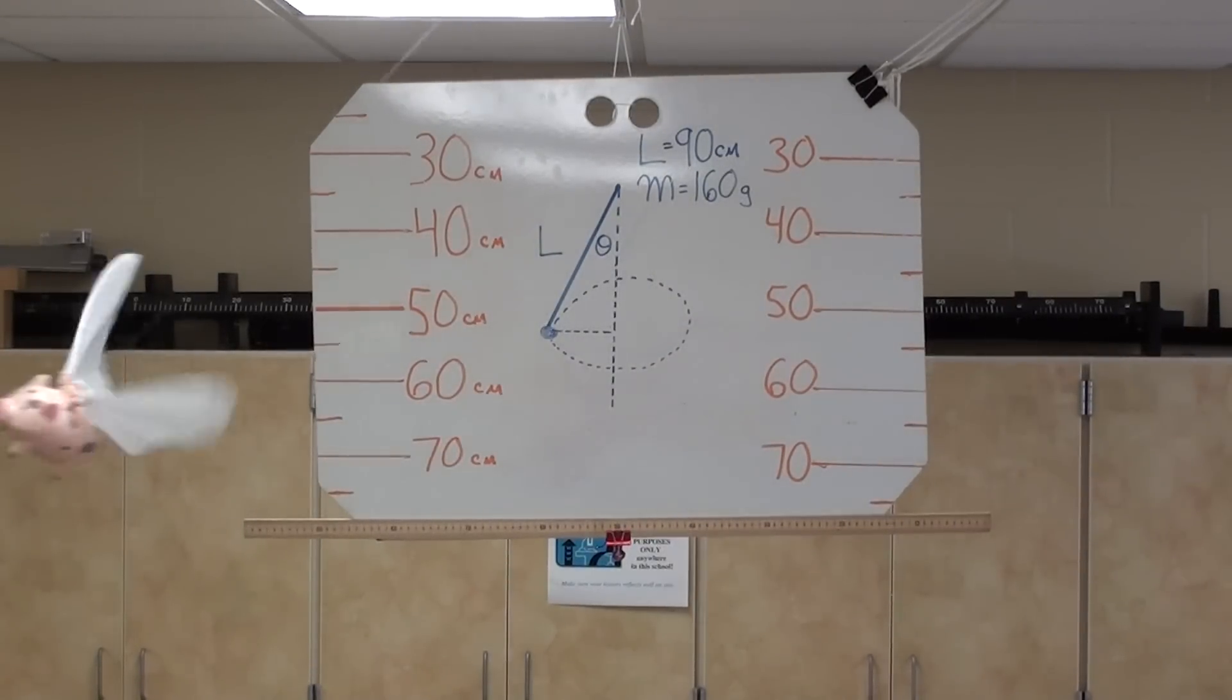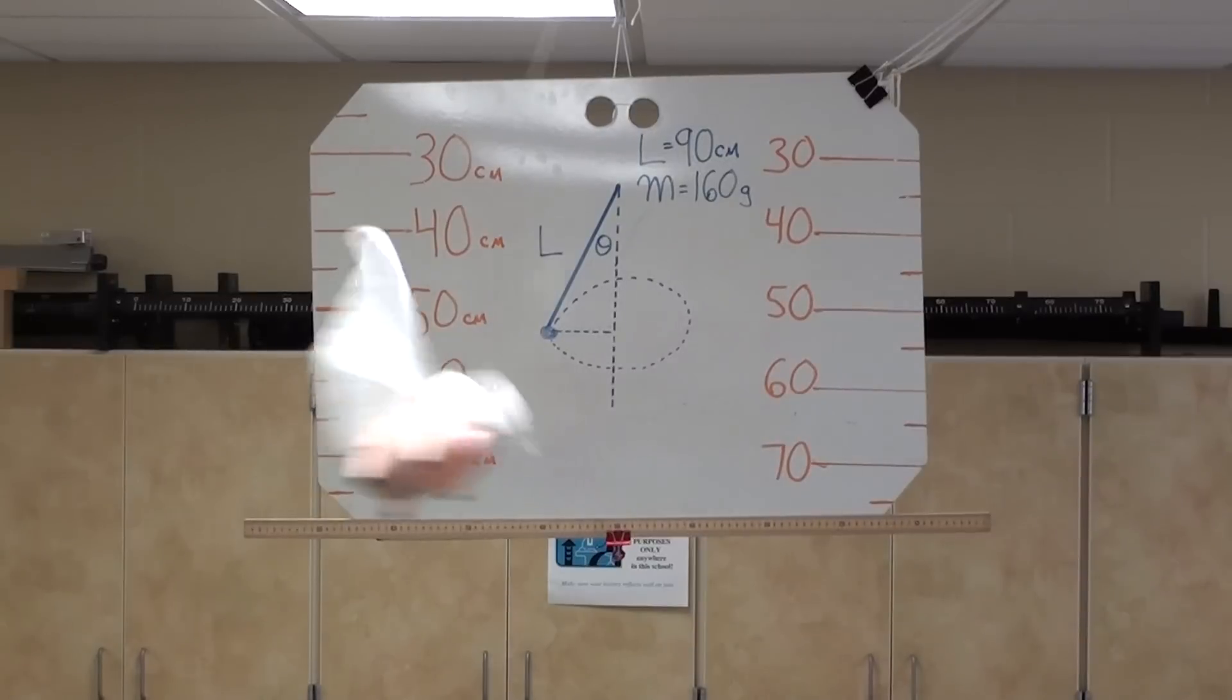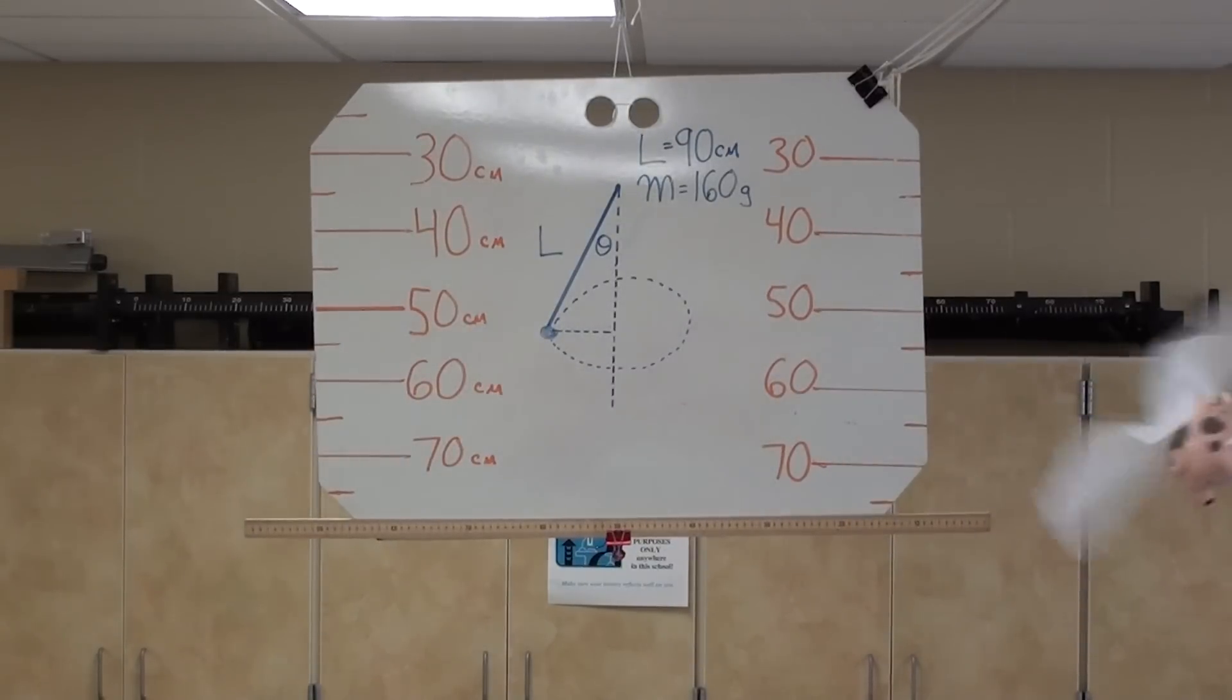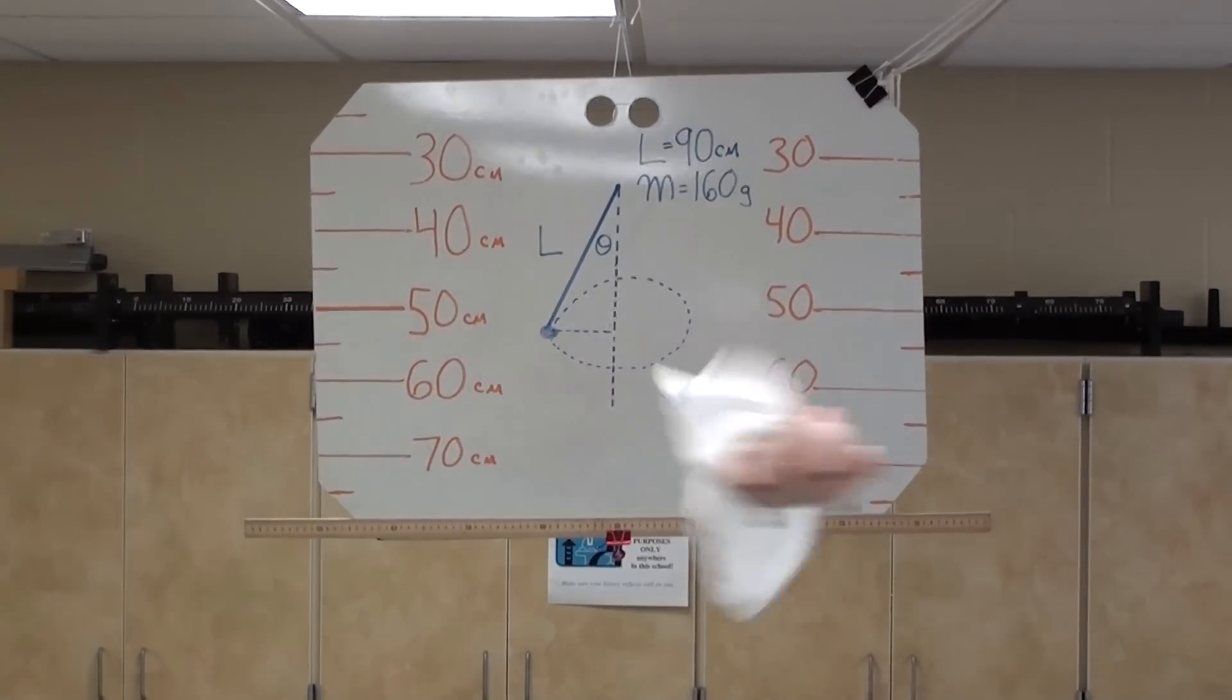What it makes is something called a conical pendulum. It goes around in a circle. The angle that it makes, the theta that's on there on the board, depends on the speed that it goes as well as the frequency.